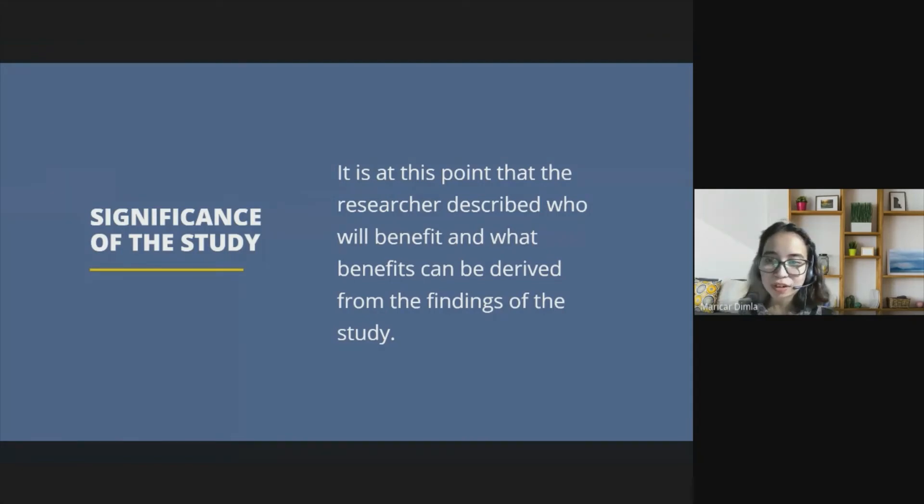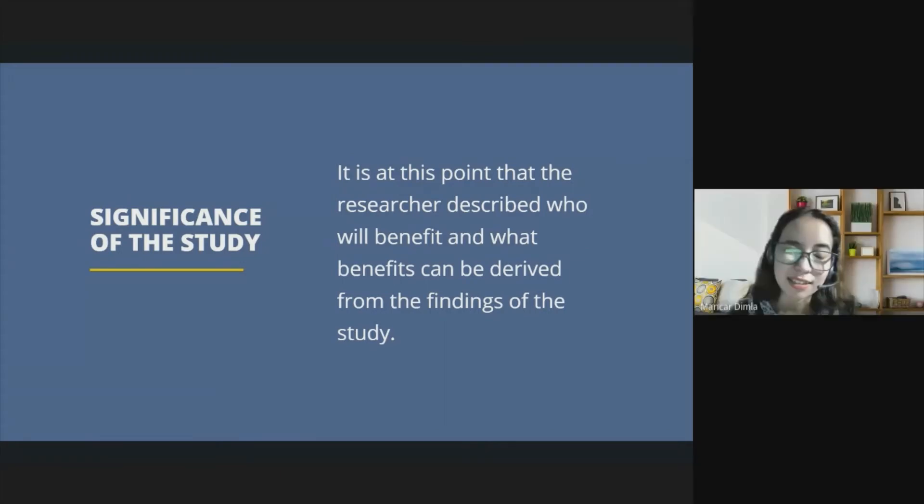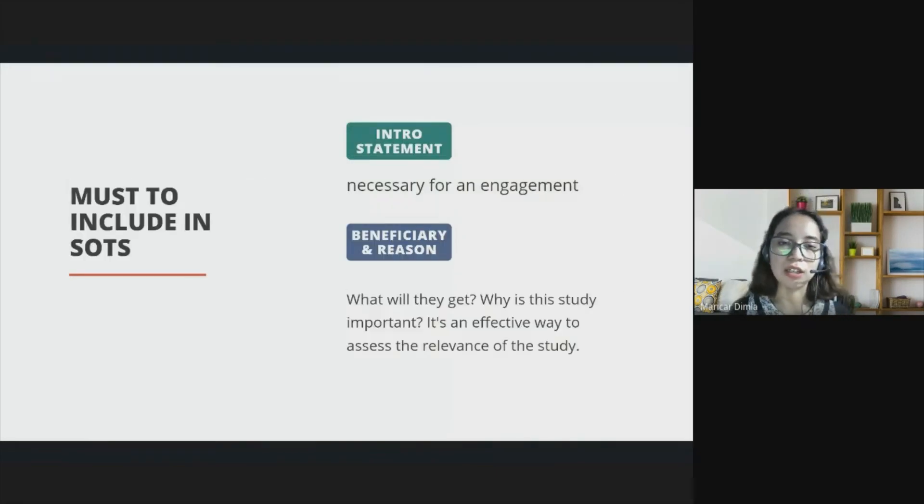Significance of the study: it is at this point that the researcher described who will benefit and what benefits can be derived from the findings of the study. Exactly. This is what I call the technical format on how you're going to write the significance of the study. Observe the inverted pyramid from the most important beneficiary down to the least one. Let's have an example to picture it more clearly. The things we need to include in writing. Sorry class, I like using acronyms. When we say SAD: S for scope and delimitation, A for significance of the study, D for definition of terms. We have the intro statement as always.